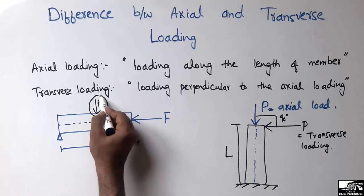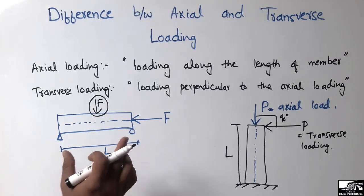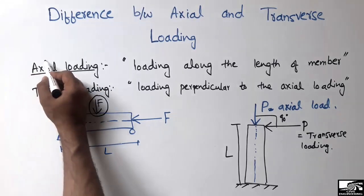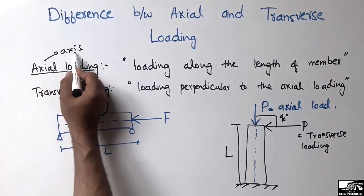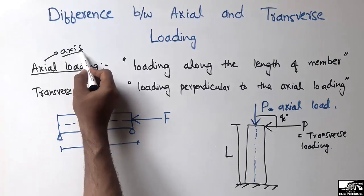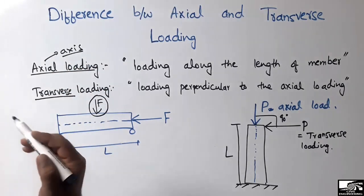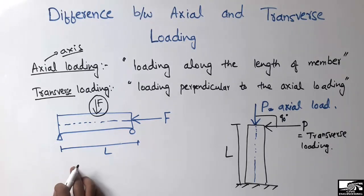This transverse load may be a uniformly distributed load or a point load. The main difference is that in axial loading, the load always acts along the axis of the member, while a load acting in the transverse — or perpendicular — direction to the axis of the member is called transverse loading.